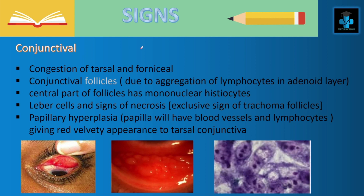Now let's move on to the signs. The major conjunctival signs are congestion of the tarsal and fornicial conjunctiva. There will also be presence of conjunctival follicles, which appear due to the aggregation of lymphocytes in the adenoid layer. The central part of the follicles has mononuclear histiocytes. Another important feature is the presence of Leber cells and signs of necrosis, as these are exclusive signs of trachoma follicles and are very important diagnostically.